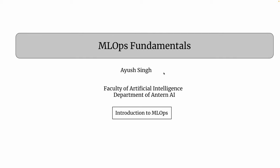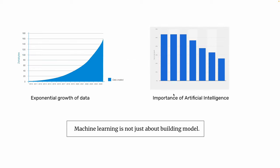The first thing to understand is that data is growing exponentially, and the importance of artificial intelligence has also increased over time. Now that we have all this data, we need to utilize it in the right and positive way — that's where AI comes in. You might think we can just build a prediction model on top of it, but you should understand that machine learning is not just about building models.